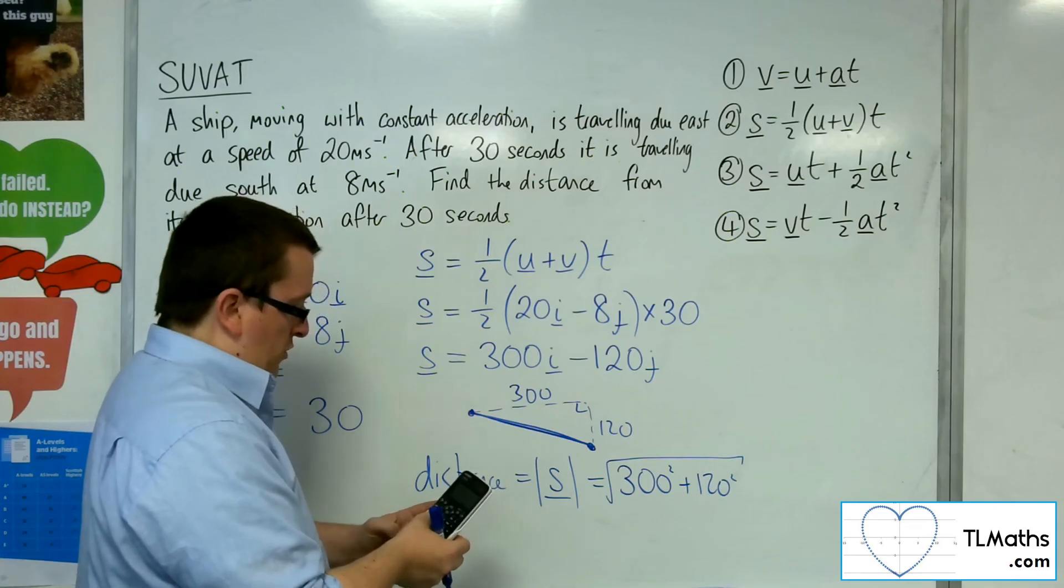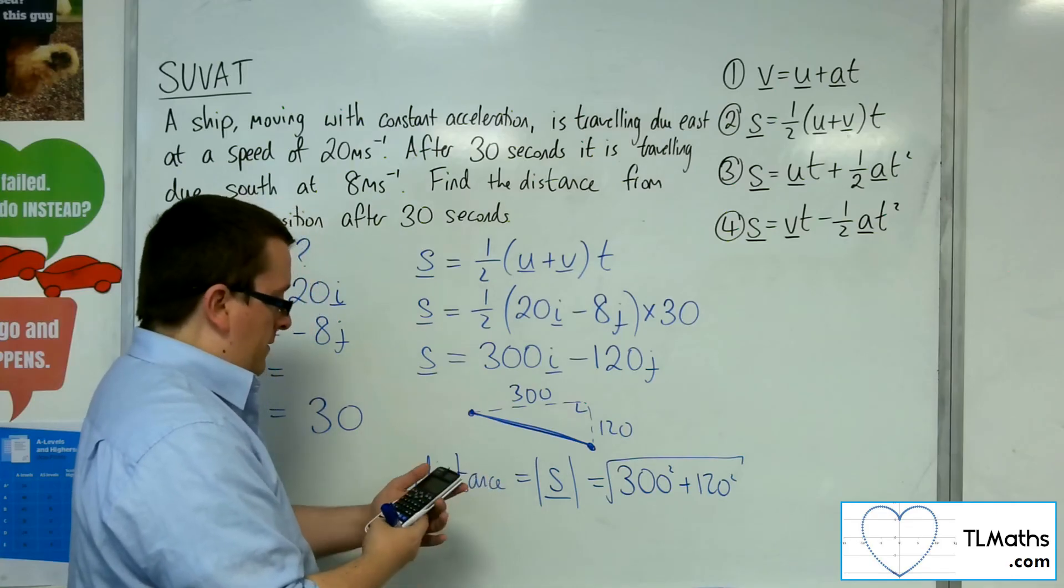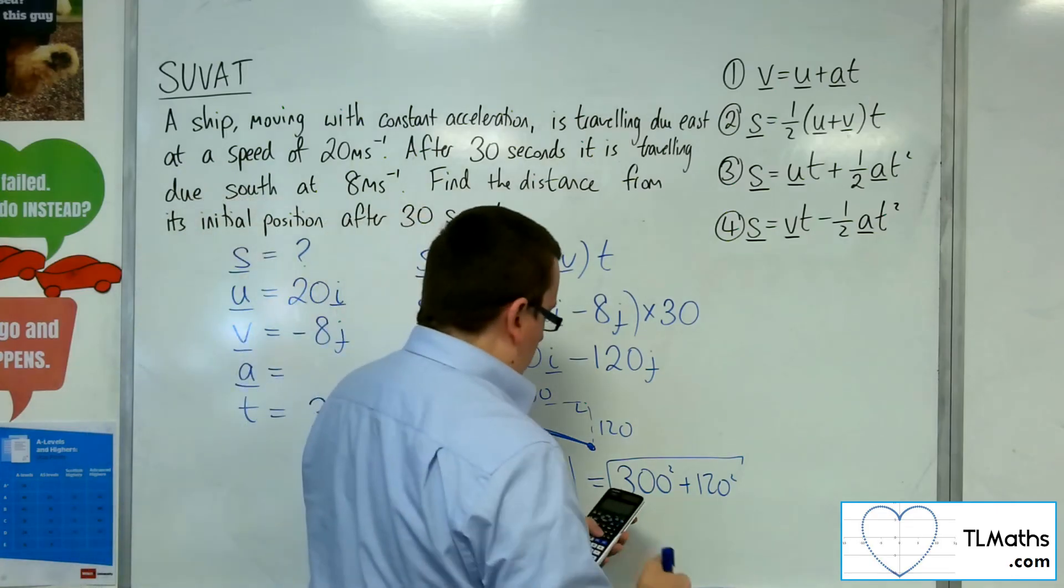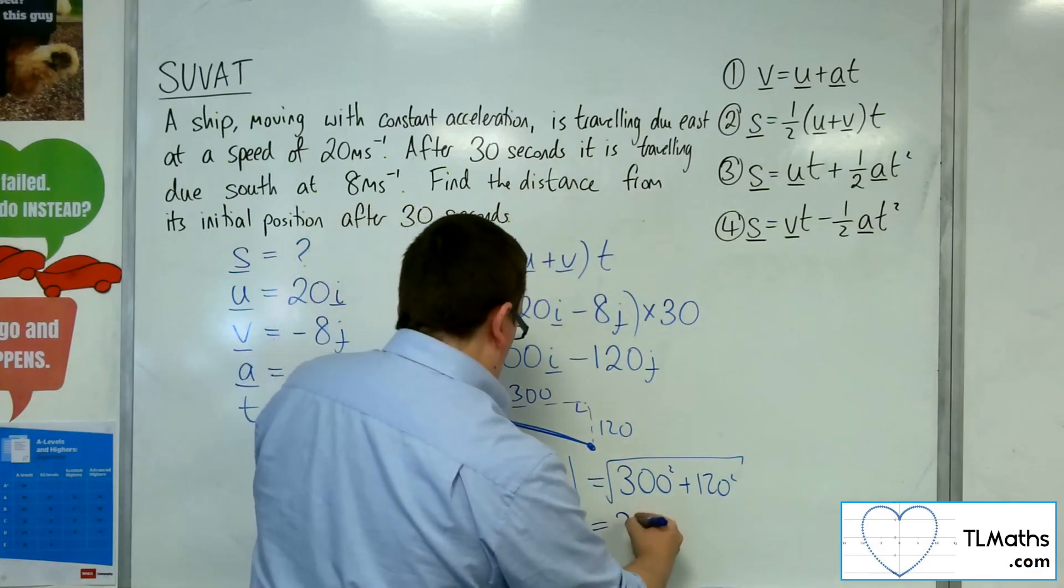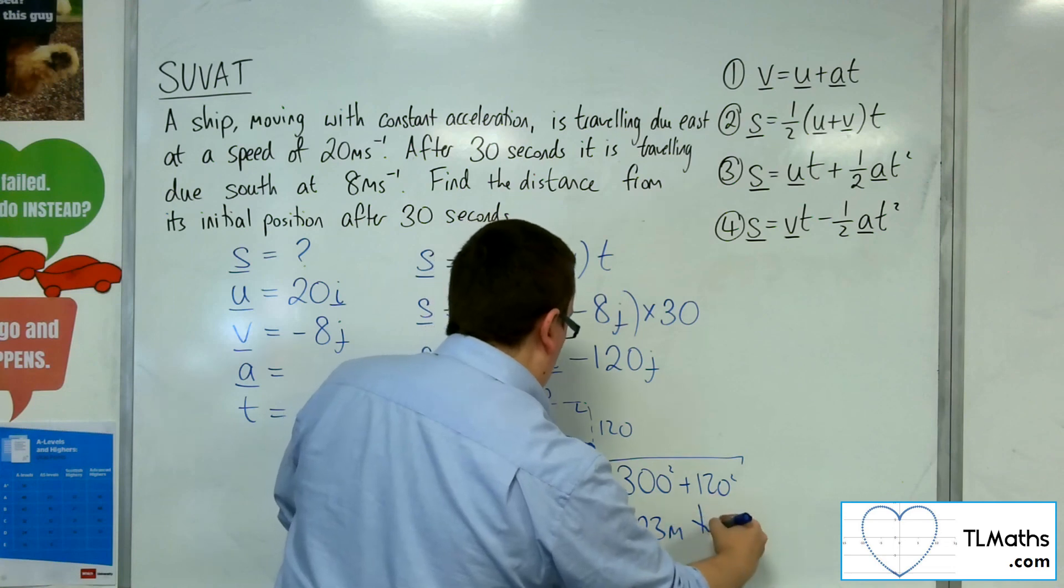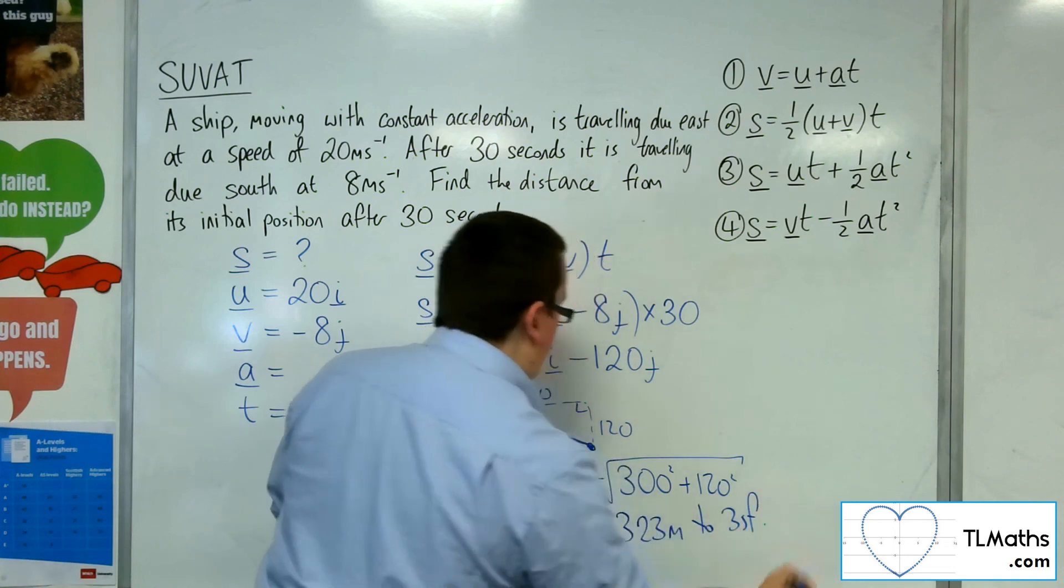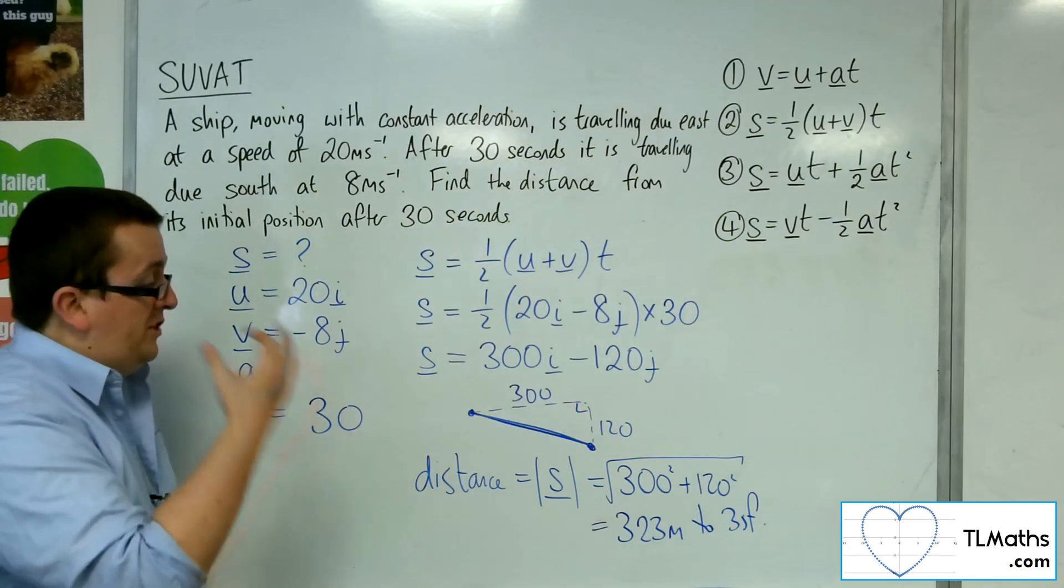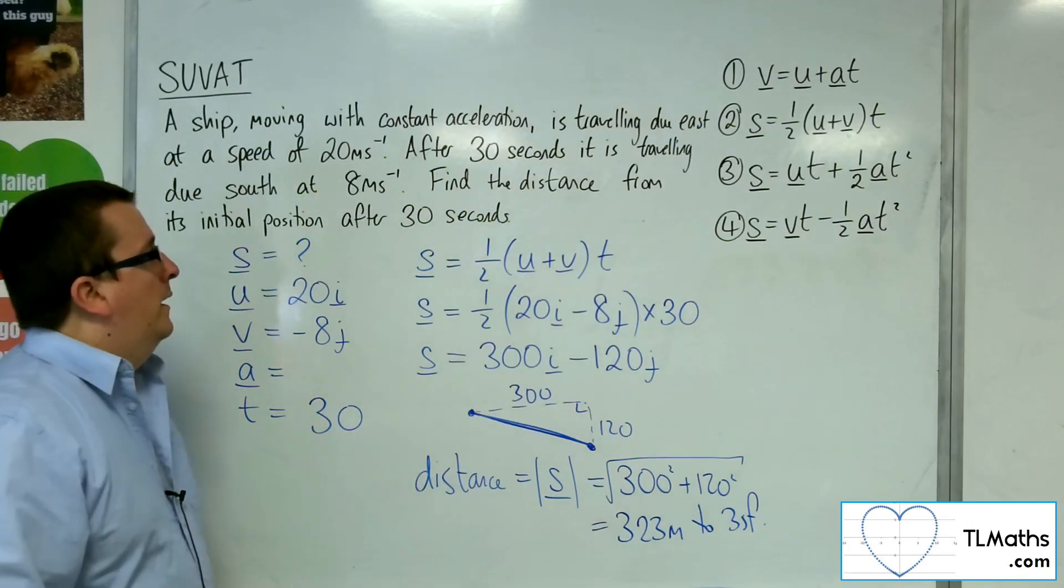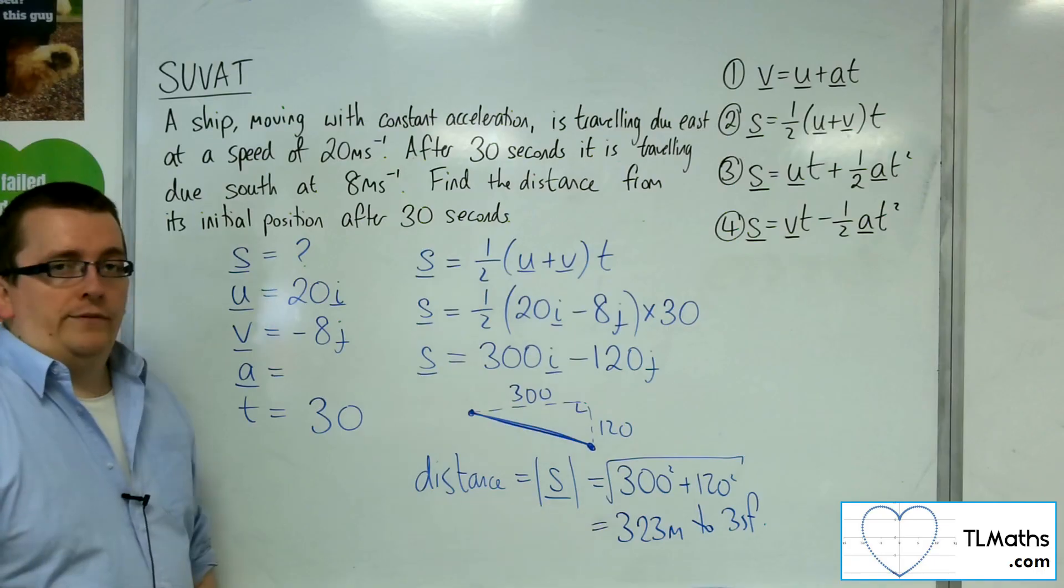So √(300² + 120²) = 60√29, which is 323 meters to three significant figures. And that's how we can find the distance of that ship from its initial position after 30 seconds.